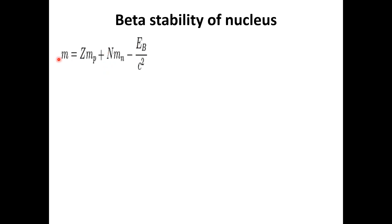We have these equations for the mass of a particular nucleus. We discussed last time that the mass of the nucleus is equal to the total mass of the protons plus the total mass of the neutrons, minus the binding energy divided by C squared.